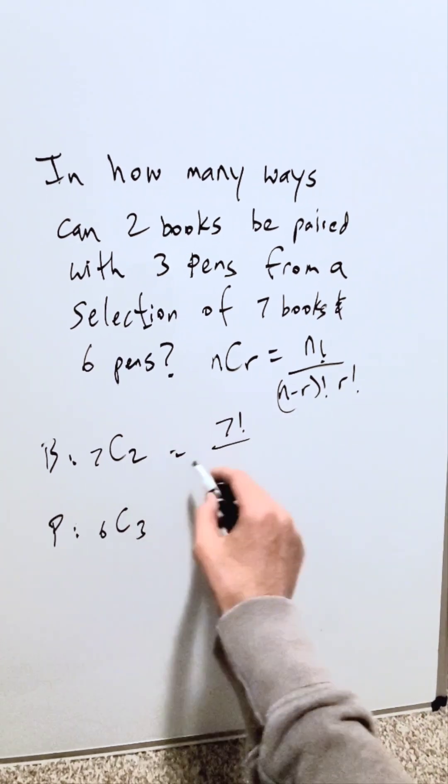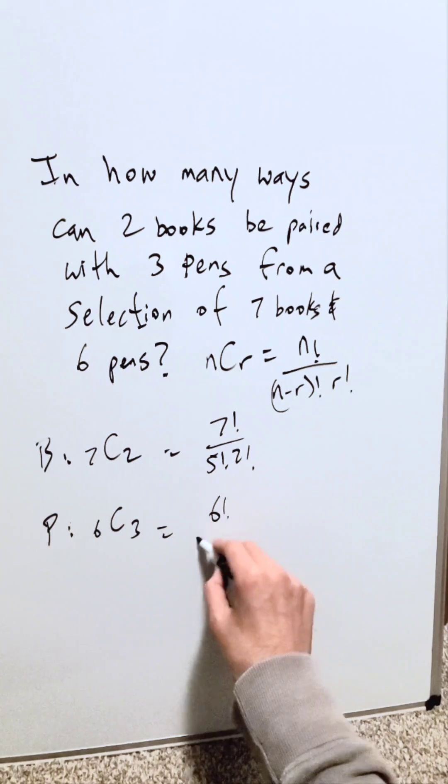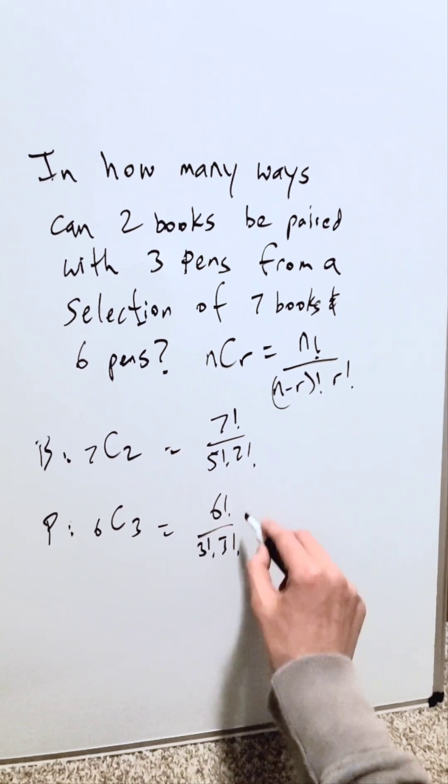This right here will be seven factorial over seven minus two, which is five factorial, times two factorial. Here I have six factorial over six minus three factorial times three factorial.